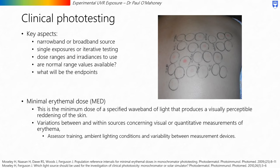On to clinical phototesting. Some of the key aspects include considering whether you would need a narrowband or broadband source, whether to carry out single exposures or iterative testing, the dose ranges and irradiances to use — often informed by the literature or prior preclinical tests — whether normal range values are available depending on your study or patient population, and what the endpoints of the study are. The most common endpoint in clinical phototesting is the minimal erythema dose, or MED — the minimum dose of a specified waveband of light that produces a visually perceptible reddening of the skin. There are variations between and within sources concerning visual or quantitative measurements of erythema, including assessor training, ambient lighting conditions, and variability between measurement devices.